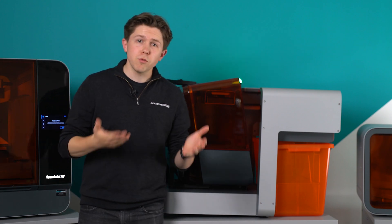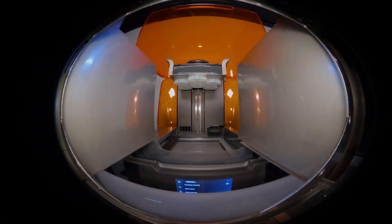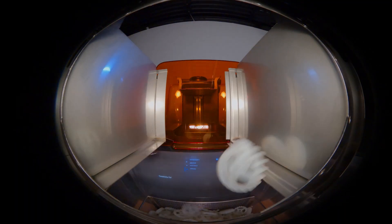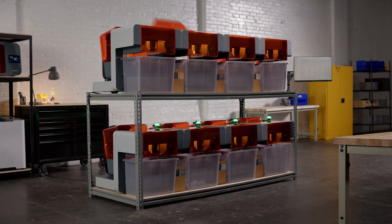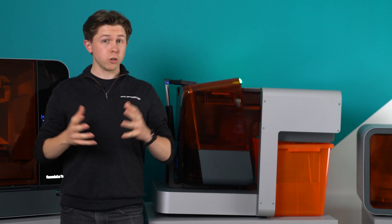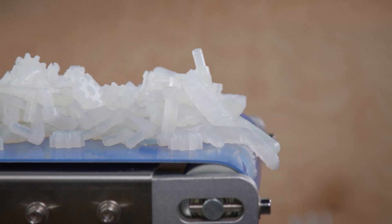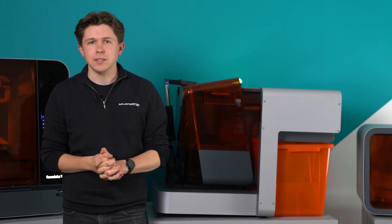And once your part is finished, the release gantry pulls out the build platform to position itself above the part release bin. The platform is flexed multiple times with a sensor detection system to ensure your part successfully drops into the bucket. This basket is also compatible with the Form Wash L, allowing minimal handling of your parts in the wet phase, ensuring a very clean and tidy setup.